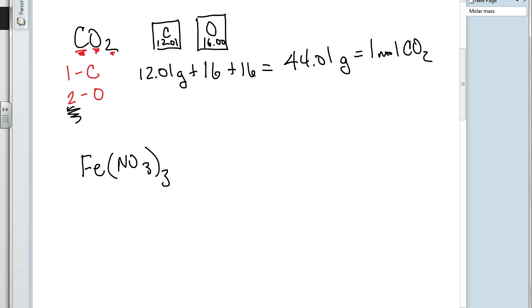So, this gets interesting. What we're going to do here is calculate the number or talk about the number of everybody in this compound. Start off with the iron right here. We have no subscript behind the iron here. So, we're going to have one iron. Just one iron atom.